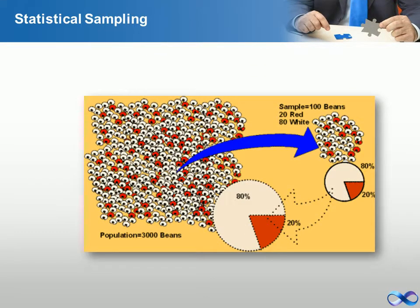In statistics and survey methodology, sampling is concerned with the selection of a subset of individuals from within a statistical population to estimate characteristics of the whole population.